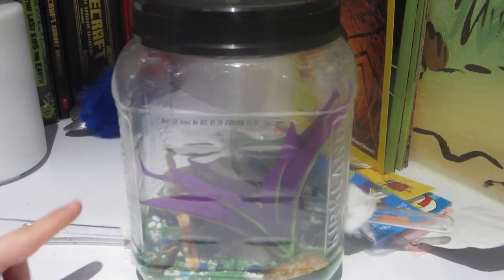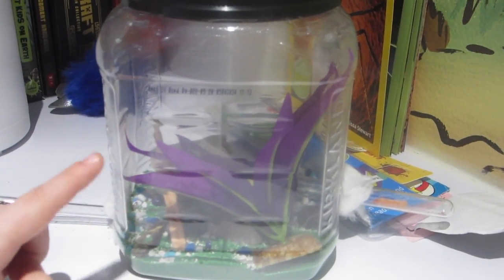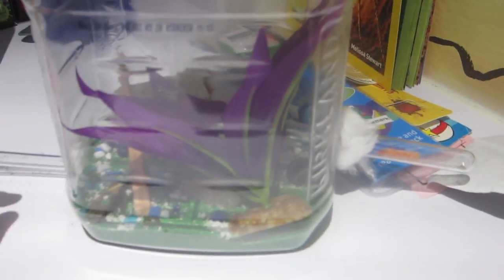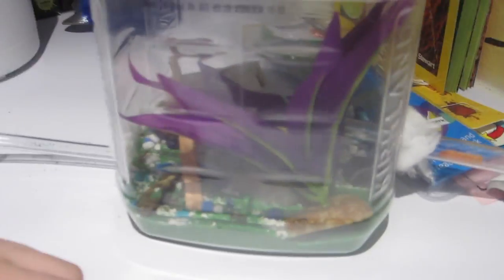That connects to another formicarium, or like an outworld, that has a few rocks, a plant, a stick, and a rock with a tunnel that I found. It also has a test tube on the end. This is where they came in.